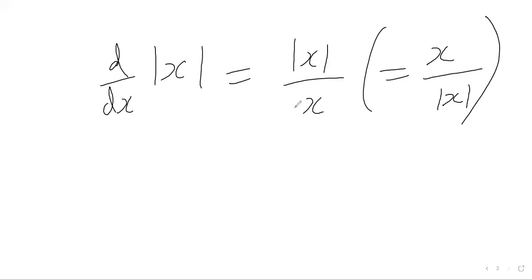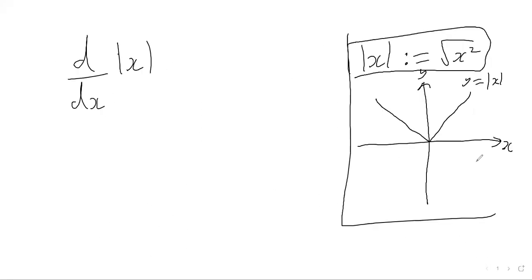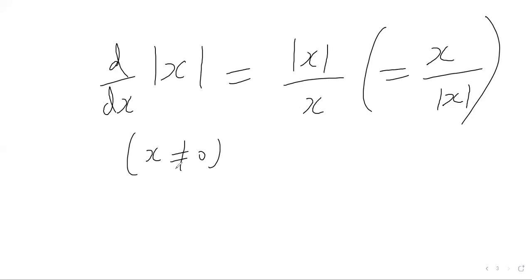So in conclusion, differentiating the modulus of x gives us the modulus of x over x, which is exactly the same as x over the modulus of x. One thing to note is that this derivative is not defined when x equals zero — x is not allowed to be zero — because our derivative gets a zero on the denominator, which means we don't have a defined derivative. And we can see from the graph that at x equal zero there's no derivative defined at that point — it could be minus one, it could be one, it's not defined.